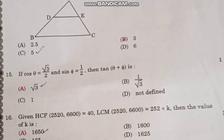Question number 15: If cos theta equals root 3 by 2 and sine omega equals 1 by 2, then theta plus omega is correct answer option A, root 3.